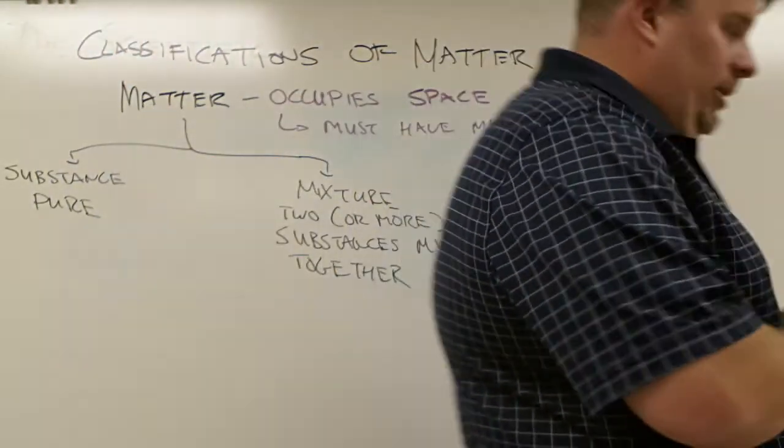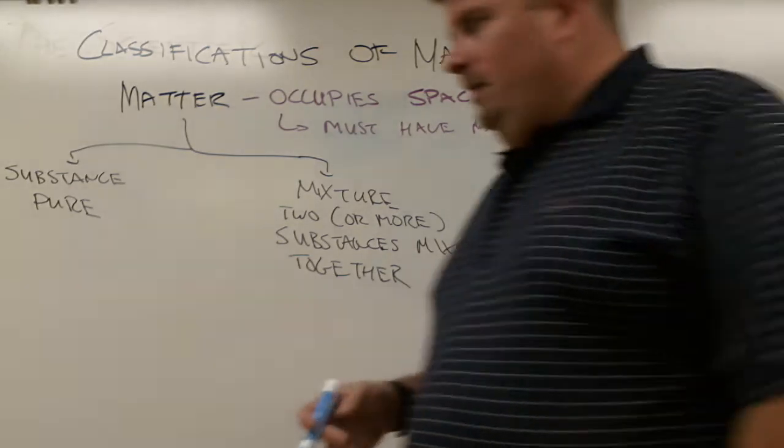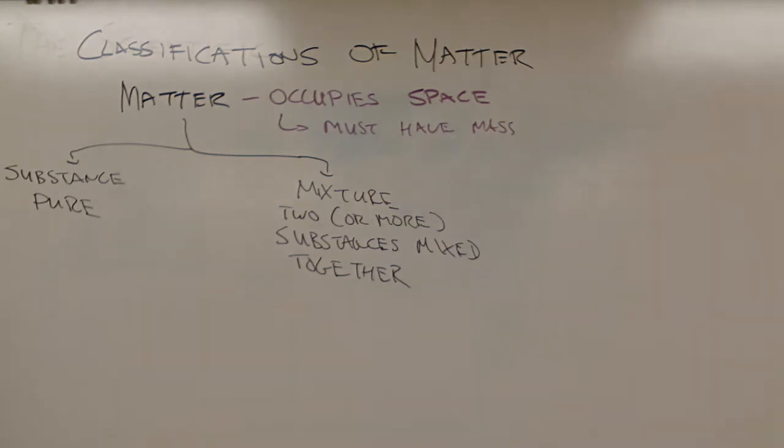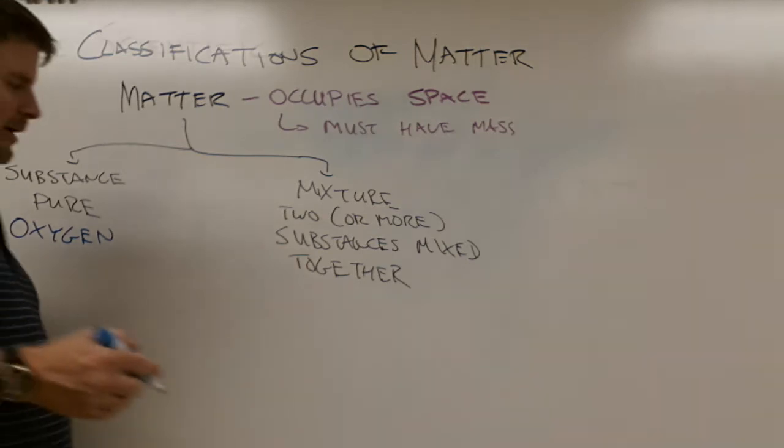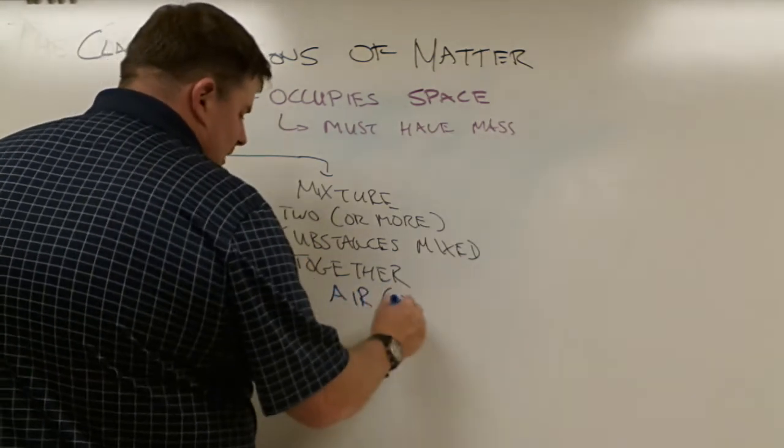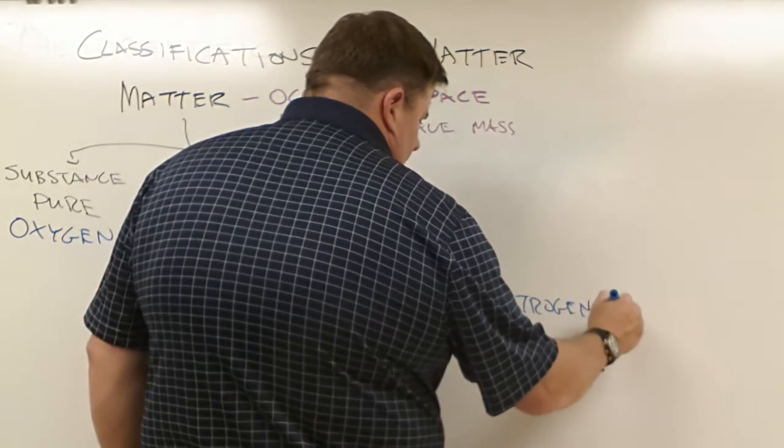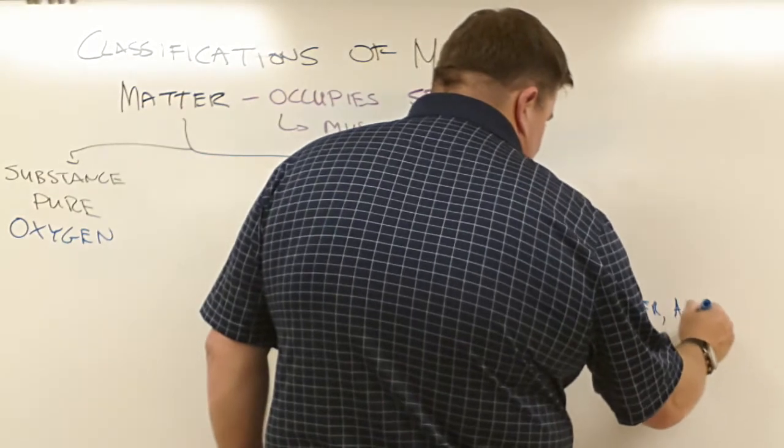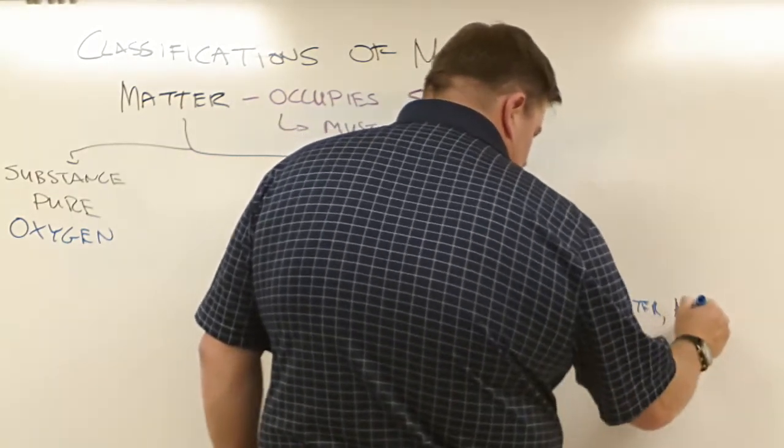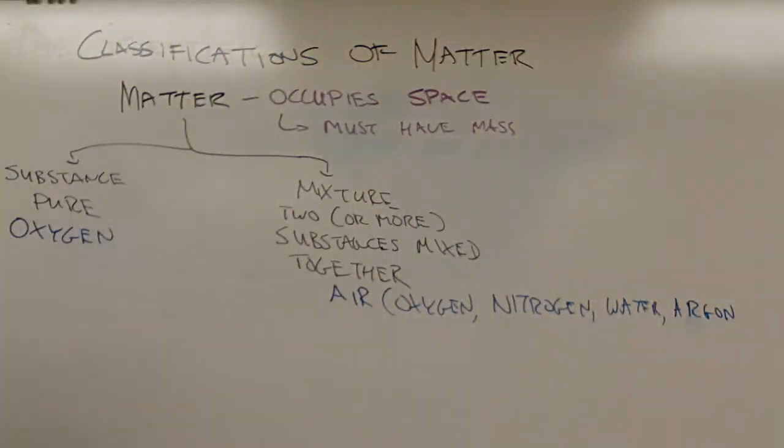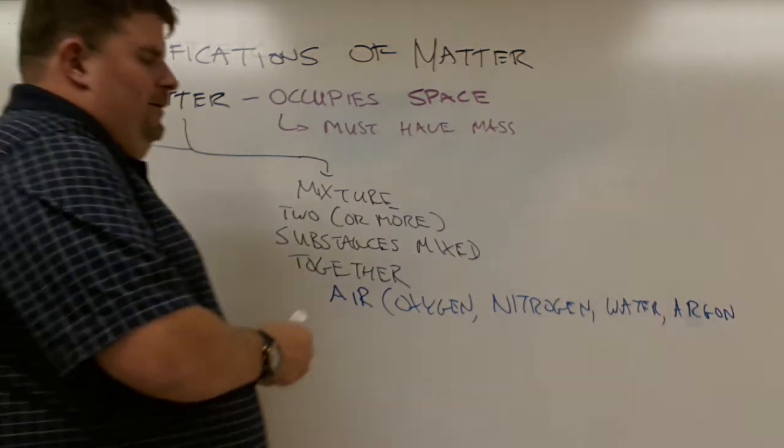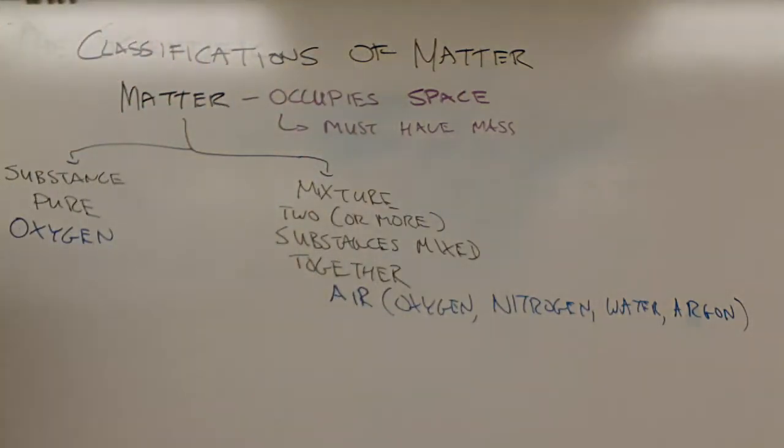Now to give you an example of some things in common life that are mixtures or substances. Something that you often run into: oxygen. Oxygen gas itself is going to be a pure substance, but what we breathe in reality is air. And air is a mixture. It has oxygen gas, nitrogen, water, argon, carbon dioxide, carbon monoxide, some xenon probably. All of these things are mixtures of what we have in the air.